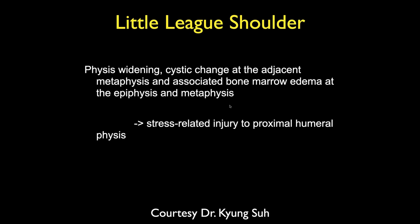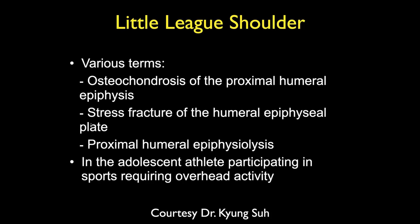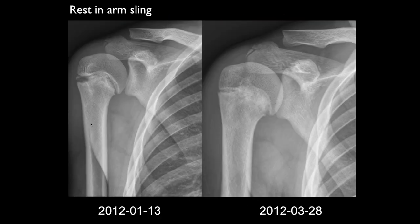This should never happen — it just should not. Here is that patient with the abnormal growth plate. The arm was put in a sling on 1-13-2012. On 3-28-2012 — ten weeks later — there's significant healing in the area of the growth plate injury. The thing about this healing is that the growth plate is closing, so this arm is not going to be as long as the other one. That's pretty bad at this early age.